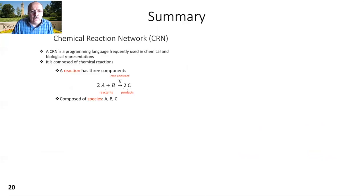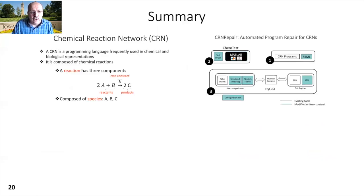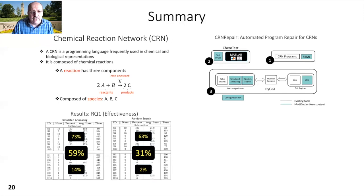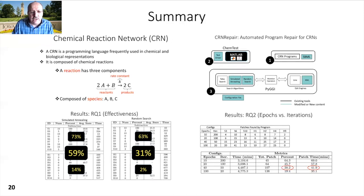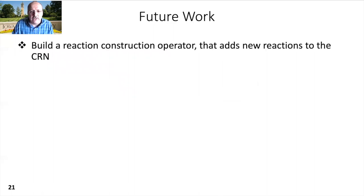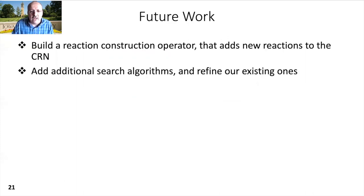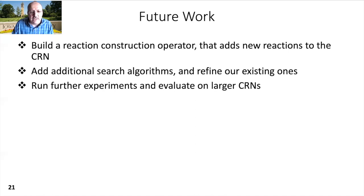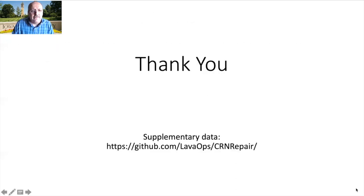In this research, we proposed the CRN repair framework using two existing frameworks, ChemTest and Piggy. We demonstrated that our framework is successful, and that for a fixed budget there is a trade-off between number of epochs versus iterations. As future work, we plan to build a reaction construction operator that adds new reactions to the CRN, add additional search algorithms and refine existing ones, run further experiments on larger CRNs, and work on alternative fitness functions and fault localization. Supplementary data can be found on our website. Thank you.